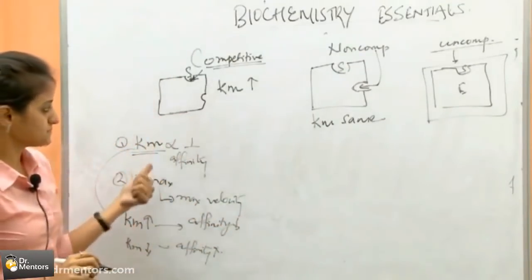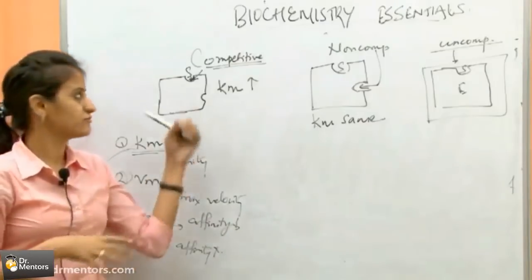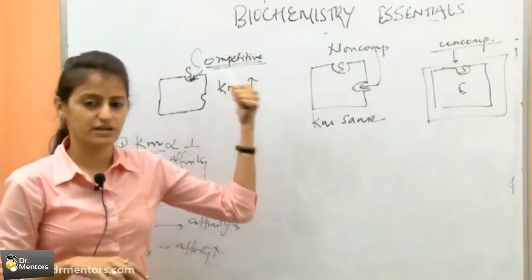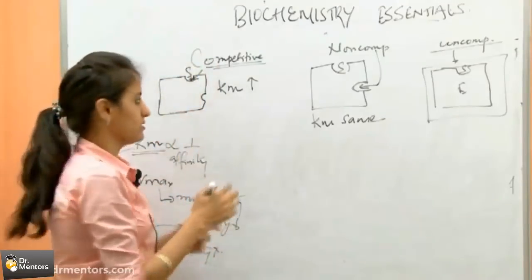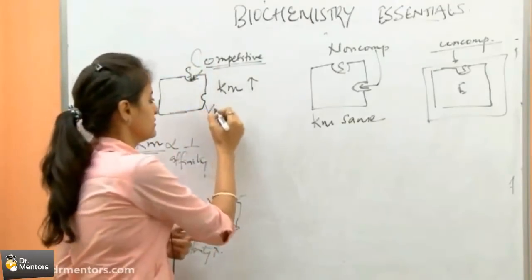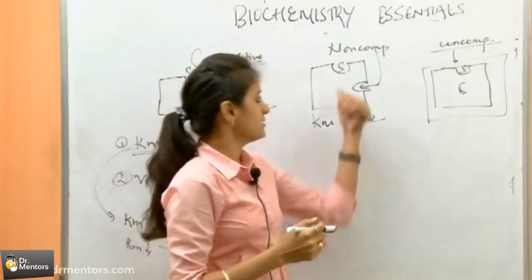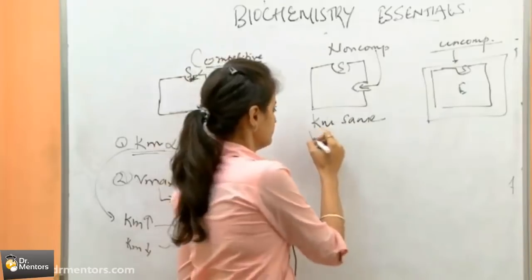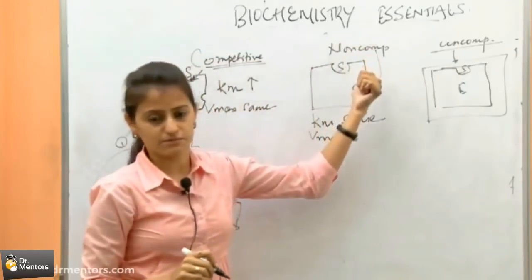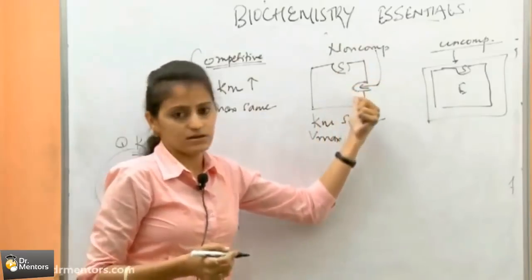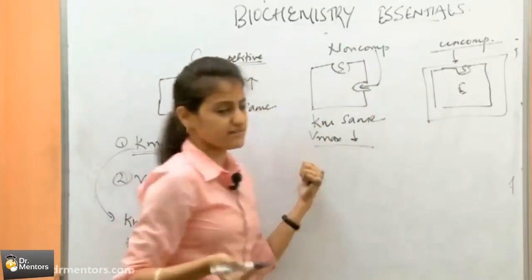Now looking at Vmax: in competitive inhibition, when you increase the concentration of the substrate in much excess of the inhibitor, it will displace the inhibitor and the substrate will bind and the reaction will proceed — so Vmax remains the same. In non-competitive inhibition, Vmax will decrease, because even if you increase the substrate concentration, the inhibitor is still bound to the enzyme.